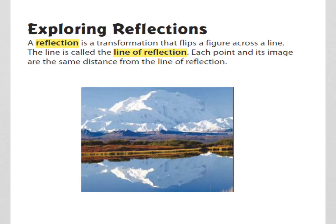A reflection again is a transformation that flips across a line and the line is called the line of reflection. Each point and its image are the same distance from this line. Very important piece of information there. As you can see here from this mountain picture, in this lake, the bottom is not down here, but that's called a line of reflection. We'll see exactly how that works.